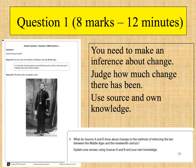Question 1 will always give you two different historical sources, and you'll need to make an inference about change — what changes have happened between the two sources. In this example, we can see two sources about law enforcement: Source A about law enforcement in the Middle Ages, talking about the hue and cry and the tithings.